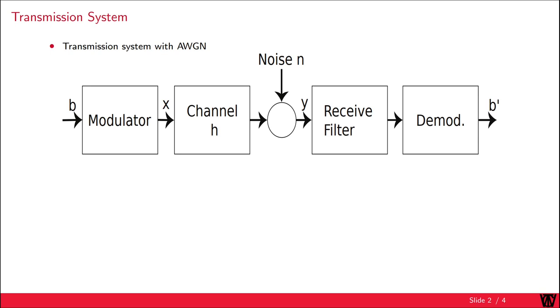This time around, we have a new component in our transmission system, which is the receive filter. After applying the receive filter, we can demodulate the received symbol to the detected bits b'. The focus of today's video will be the channel h, as we assume a Rayleigh fading channel.